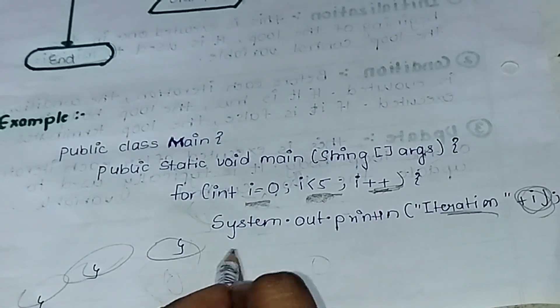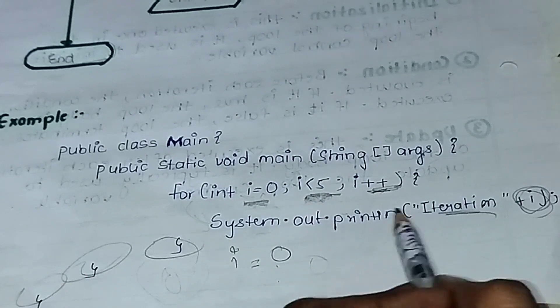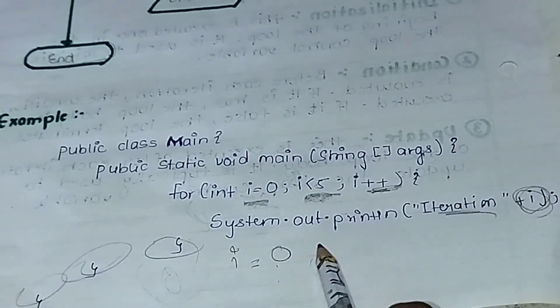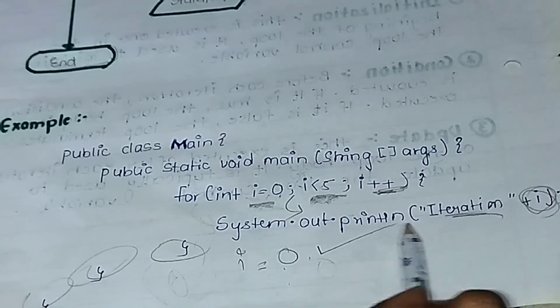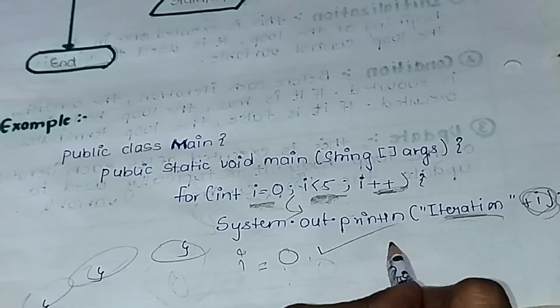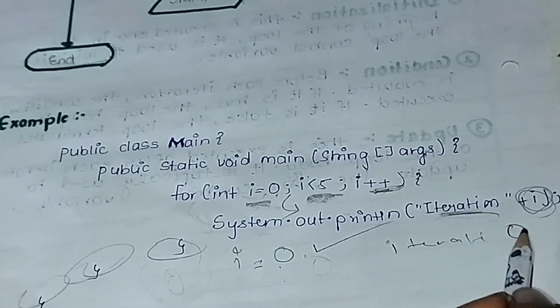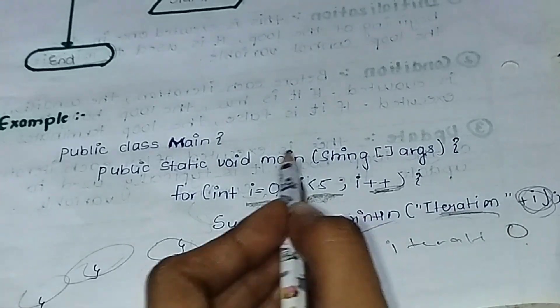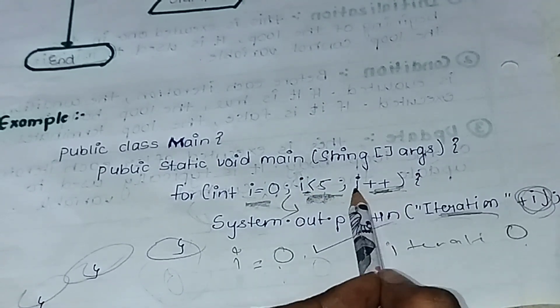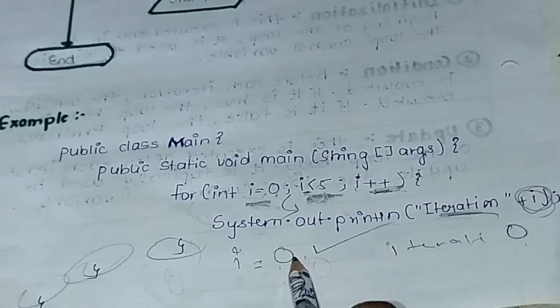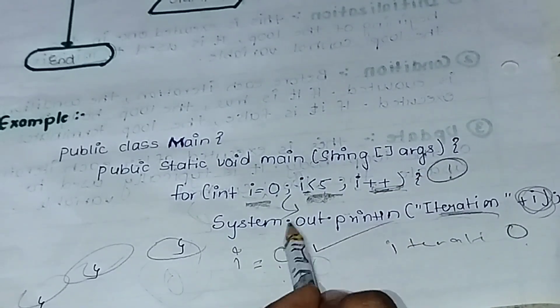Here i equals 0. I is less than 5 - is this condition true? 0 is less than 5, of course it's true. So it will go inside and print the line iteration, and then the value of i which is 0. Then it will go back and check: 0 is less than 5, and go to the next line. I plus plus - i's value was 0, now it becomes plus plus which is 1. So it will go to iteration i, and print iteration and then 1.